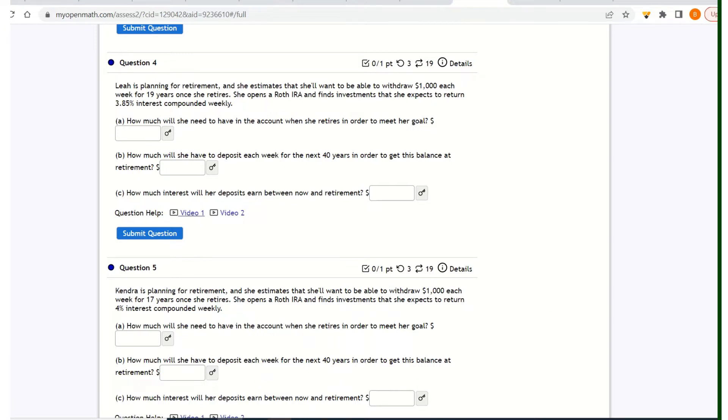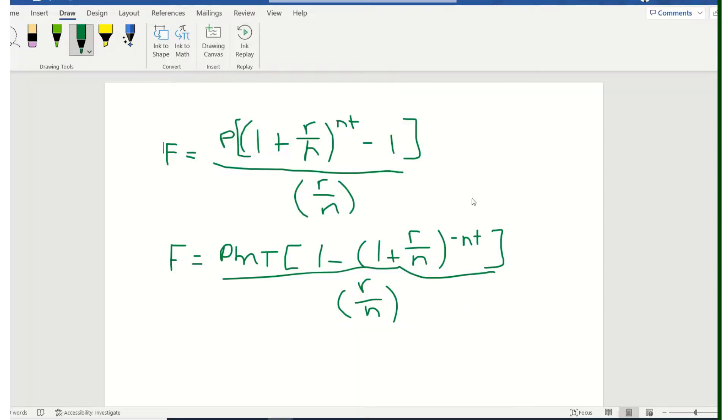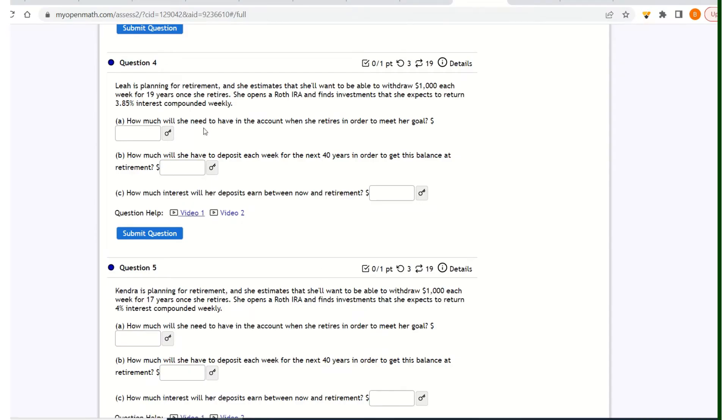So we're going to go over to a sheet where I've written the formulas that we are going to use. The first question is, how much will she need to have in her account when she retires in order to meet her goal?